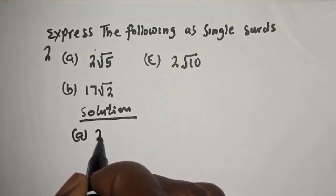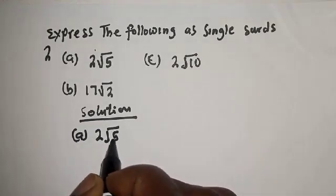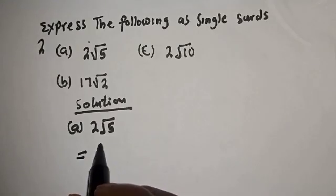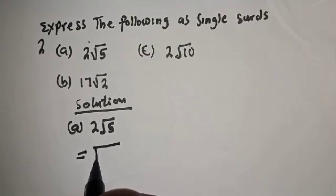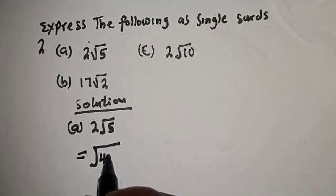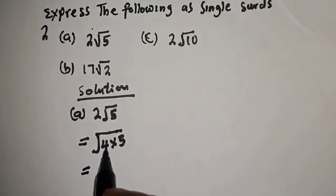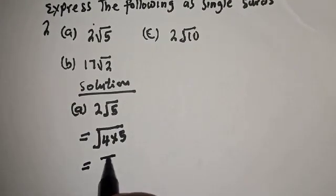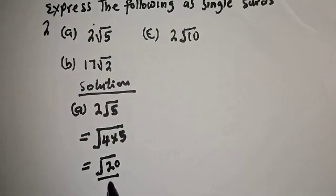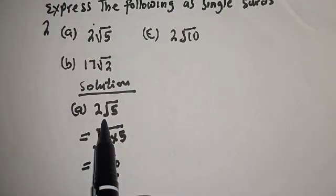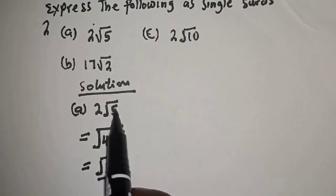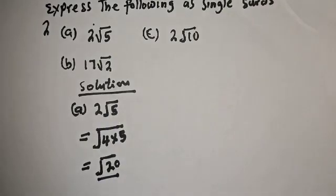For (a): 2 root 5 equals square root of 4 multiplied by 5. This equals square root of 20. This is the final answer — we've expressed it as a single surd.